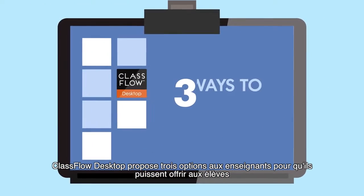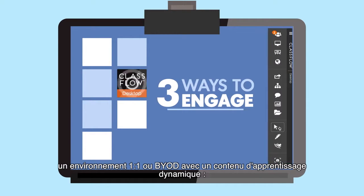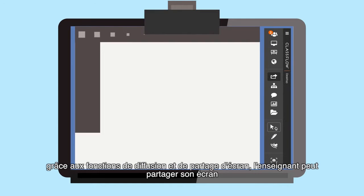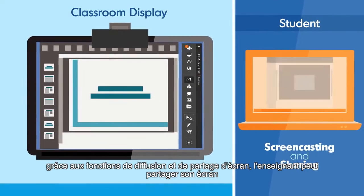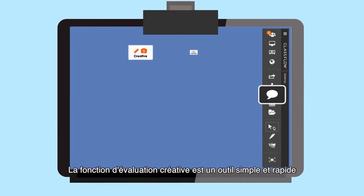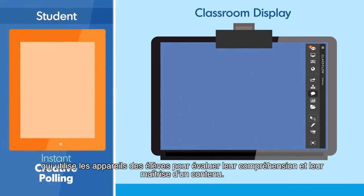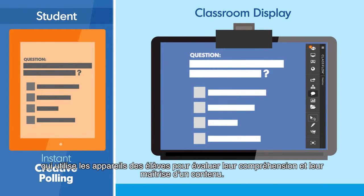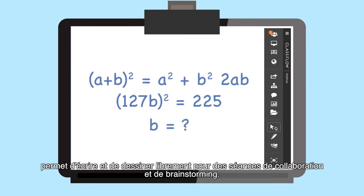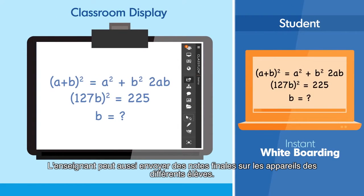Classflow Desktop offers three ways for teachers to engage students in a one-to-one or BYOD environment with dynamic learning content. Screencasting and sharing, in which teachers share screen images that can be viewed on any connected student device. Instant creative polling, a quick and easy way to use student devices to assess content understanding and mastery. And instant whiteboarding — write and draw freely for classroom collaboration and brainstorming, and send final notes to each student's device.